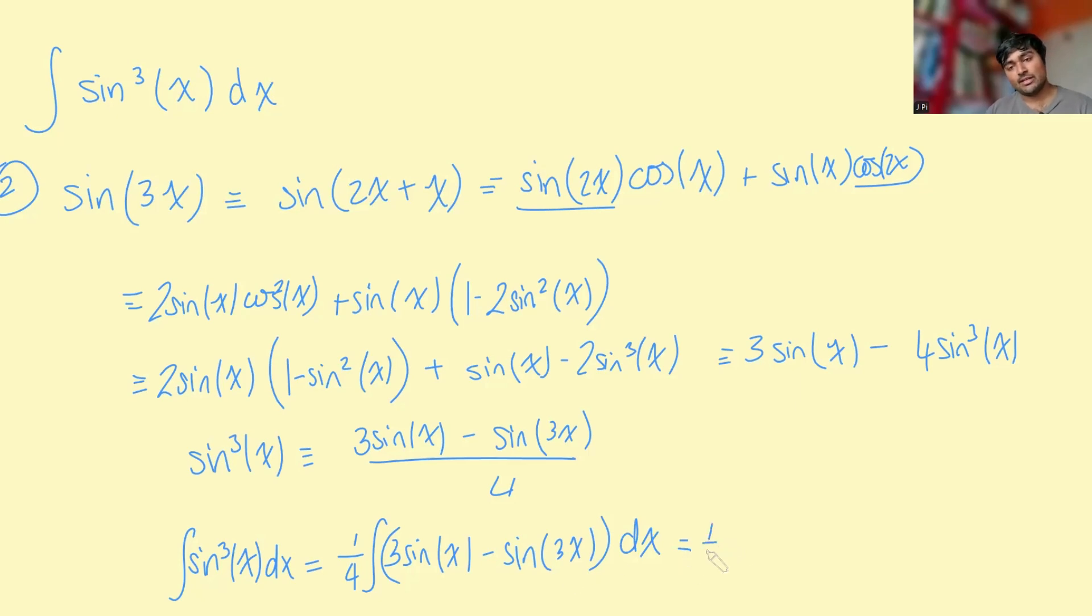And now this is pretty straightforward. I can just do a quarter, 3 sine x. What does that integrate to? Well, that's minus 3 cos x. Sine 3x, what does that integrate to? Or minus sine 3x, that's going to be positive cos, and it's going to be positive 1 third cos of 3x. And then I can shove a plus c at the end. So that is my second way to integrate sine 3x.